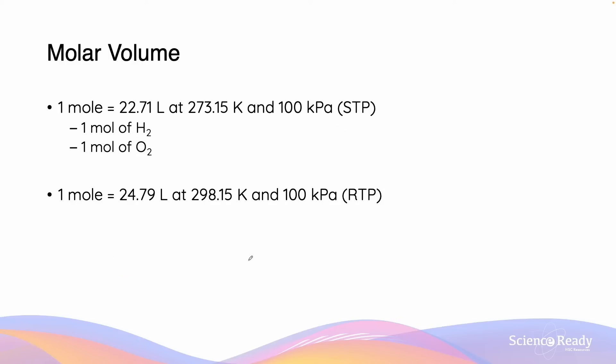A consequence of Avogadro's law is the concept of molar volume. At specific temperatures and pressures, where temperature and pressure are constant, molar volume describes the specific proportion of moles to volume. So at 273.15 Kelvin and 100 kPa which we call STP, that stands for standard temperature and pressure, one mole of gas is equivalent to 22.71 liters in volume.